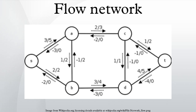In graph theory, a flow network is a directed graph where each edge has a capacity and each edge receives a flow. The amount of flow on an edge cannot exceed the capacity of the edge.